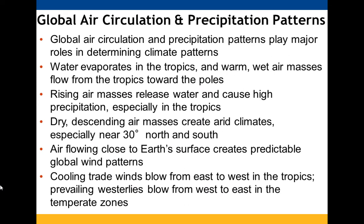Water evaporates in the tropics; warm wet air masses flow from the tropics toward the poles. Rising air masses release water, causing lots of precipitation especially in the tropics. Drier descending air masses create more arid climates, typically found around 30 degrees north and south. Air flowing closer to the earth's surface generates predictable global wind patterns: cooling trade winds blow from east to west in the tropics, while prevailing westerlies blow from west to east in temperate zones.